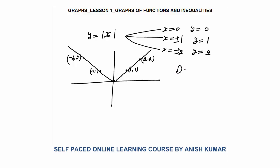The domain of y = |x| will be all real numbers, or minus infinity to infinity. The range of this function will be positive numbers, that is 0 to infinity. Zero is included because if you put x equal to 0, y becomes 0. But no negative value will come in the range — range means the output, the value of y.